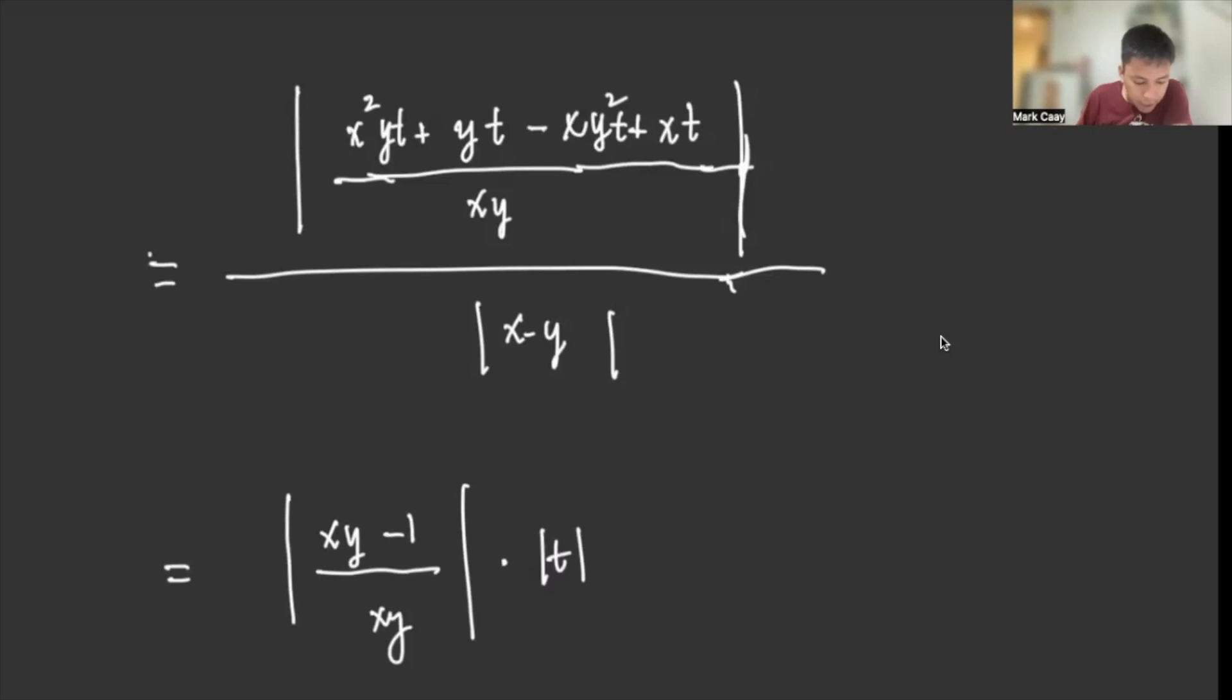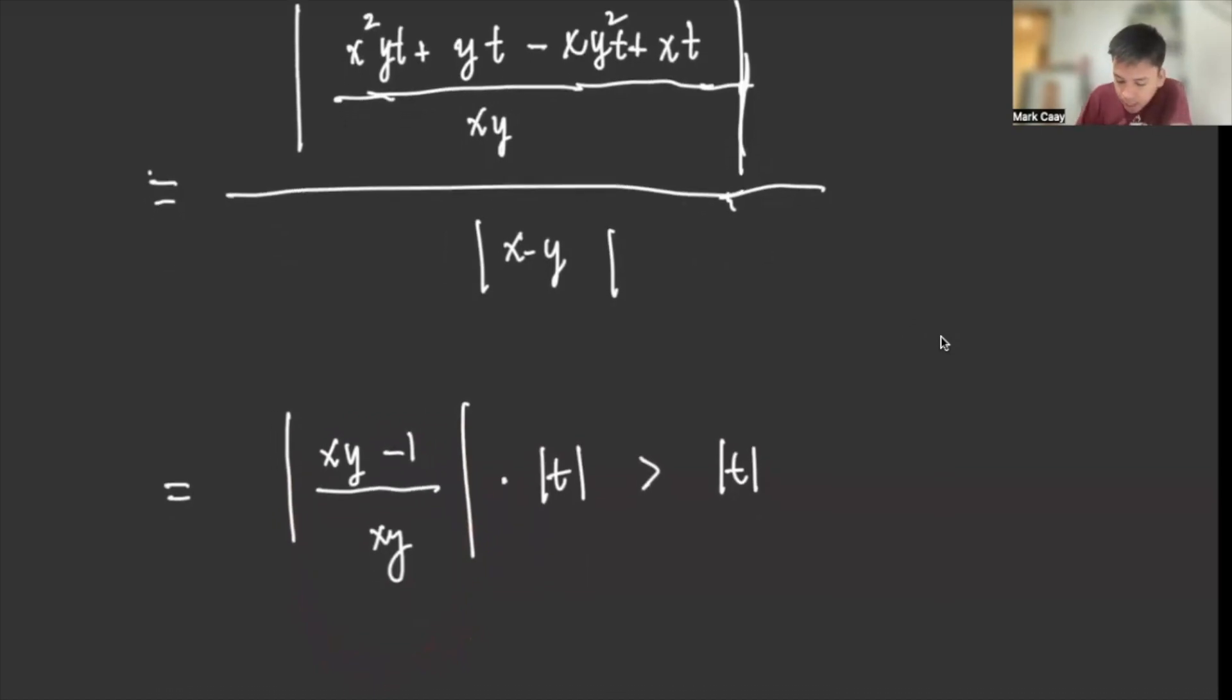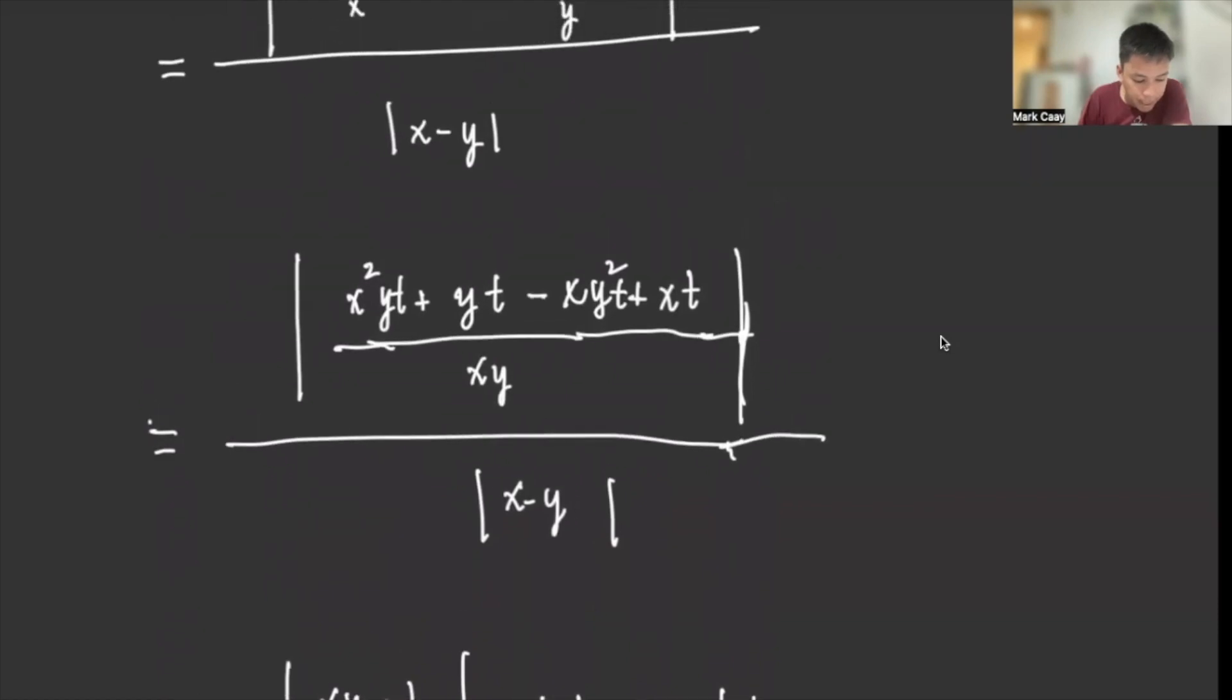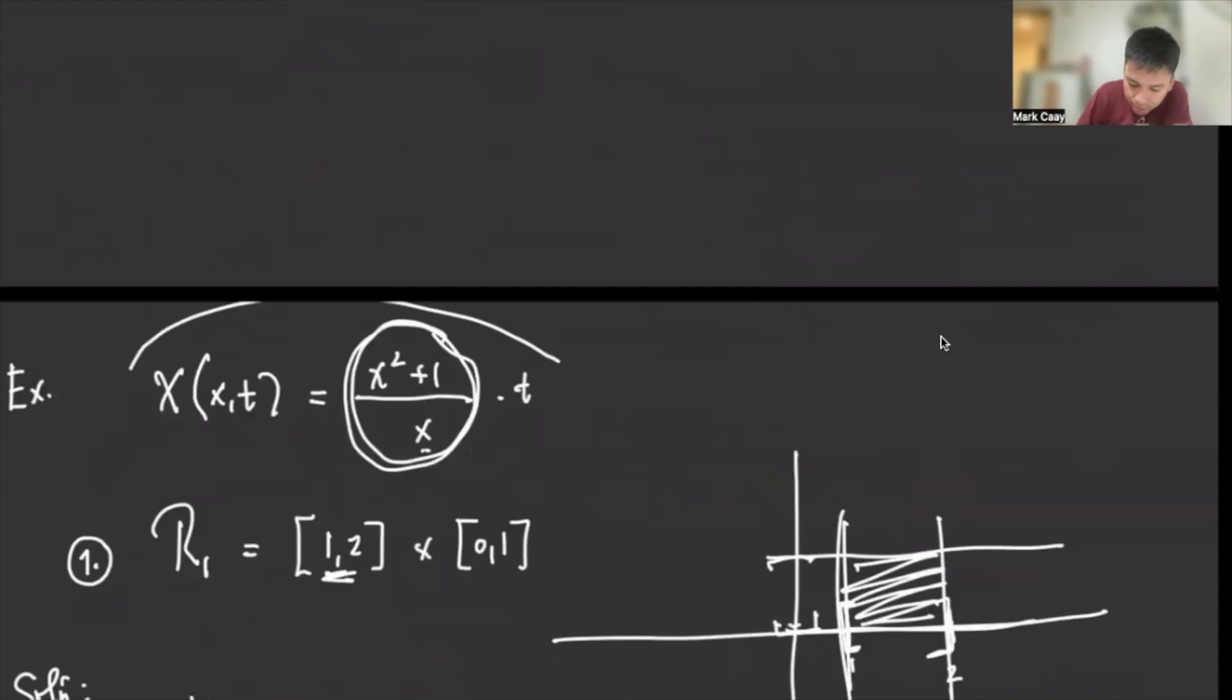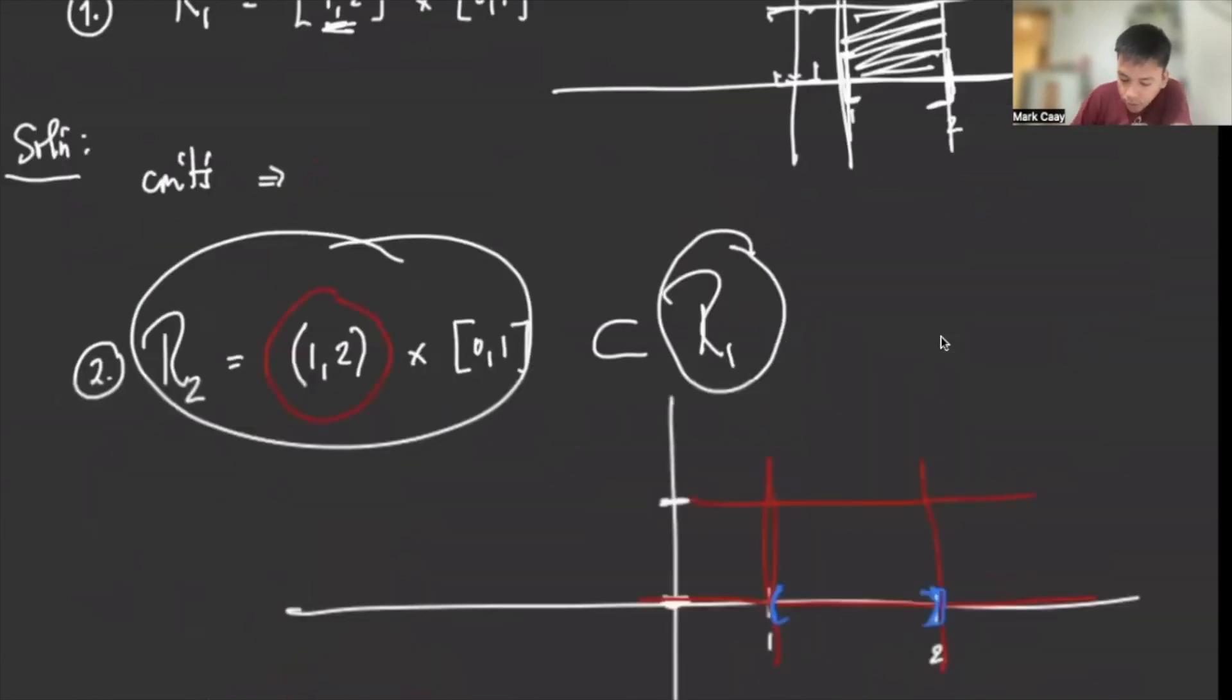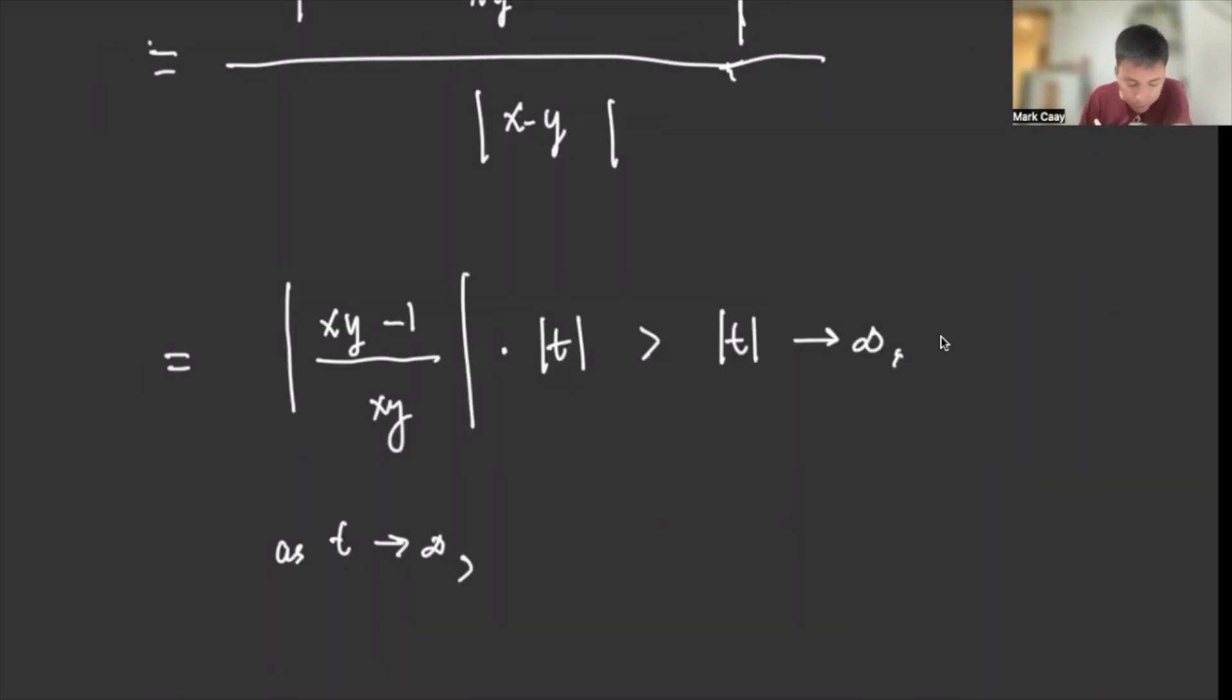So if I can simplify by algebraic manipulation, the result is |(xy - 1)/xy| times T. Okay? And remember, this is positive because it's in absolute value. So in other words, this is greater than just T. So since it's greater than just T, and this one approaches infinity as T approaches infinity, there is no such L. There does not exist such L.